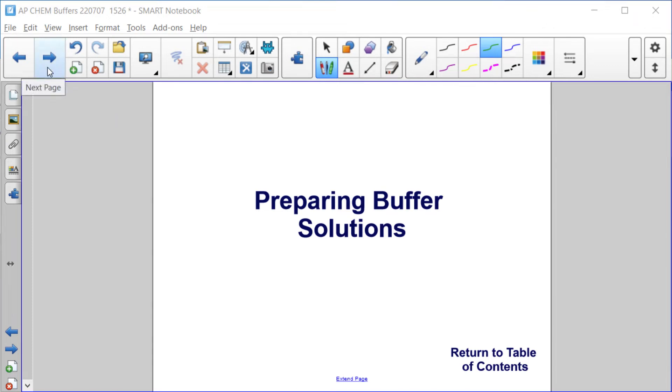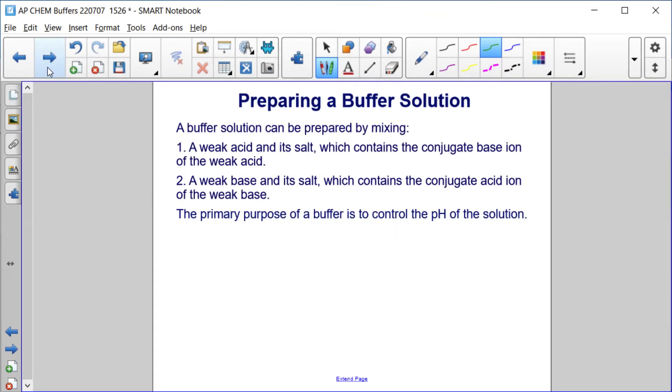Preparing buffer solutions. A buffer solution can be prepared by mixing a weak acid and its salt, which contains the conjugate base ion of the weak acid, or a weak base and its salt, which contains the conjugate acid ion of the weak base. The primary purpose of the buffer is to control the pH of the solution.